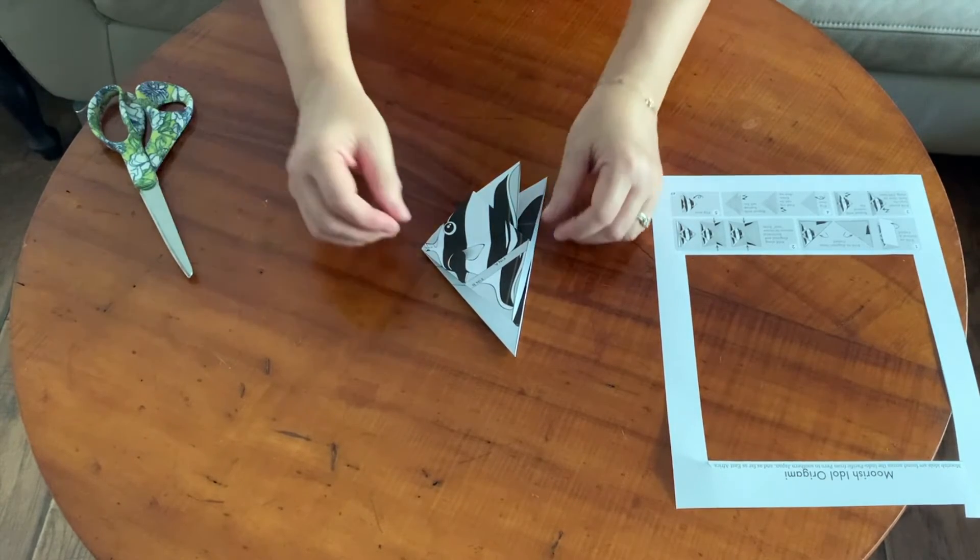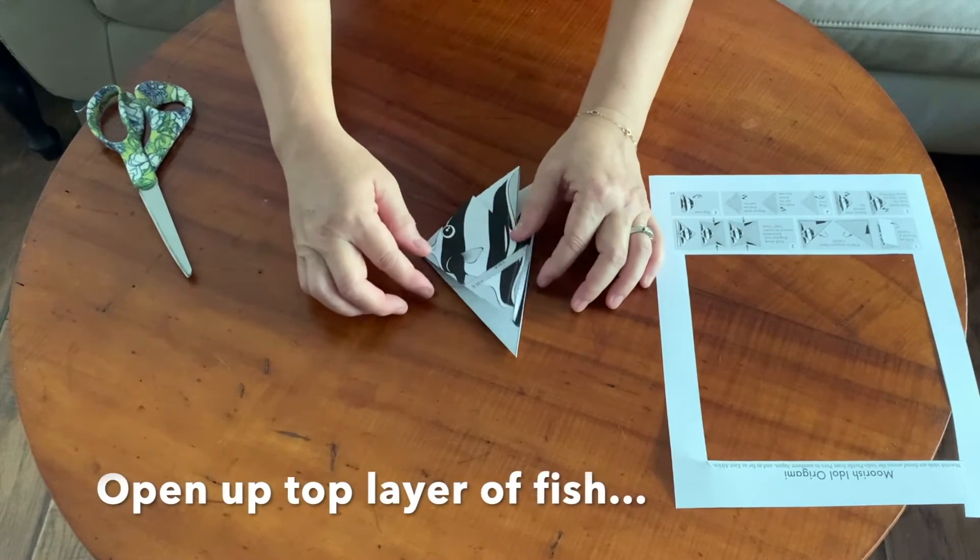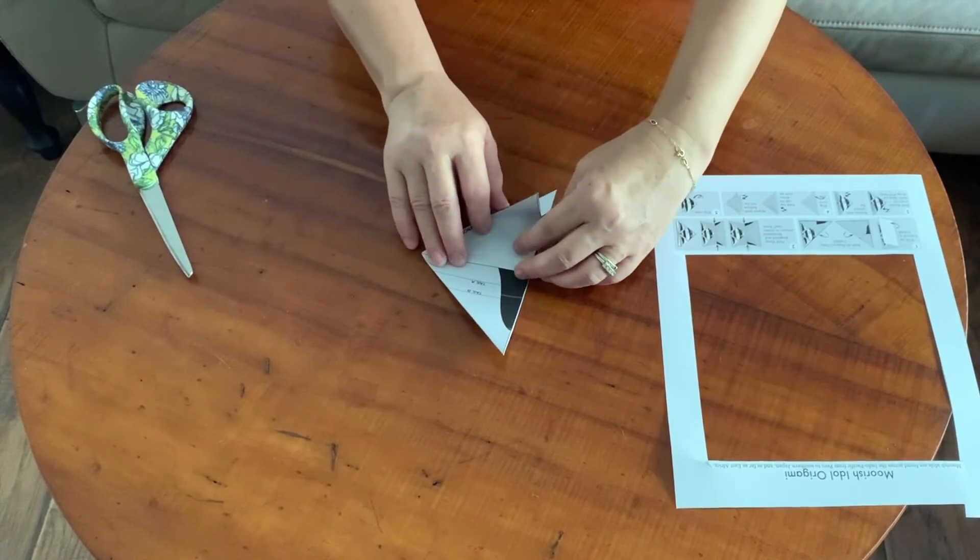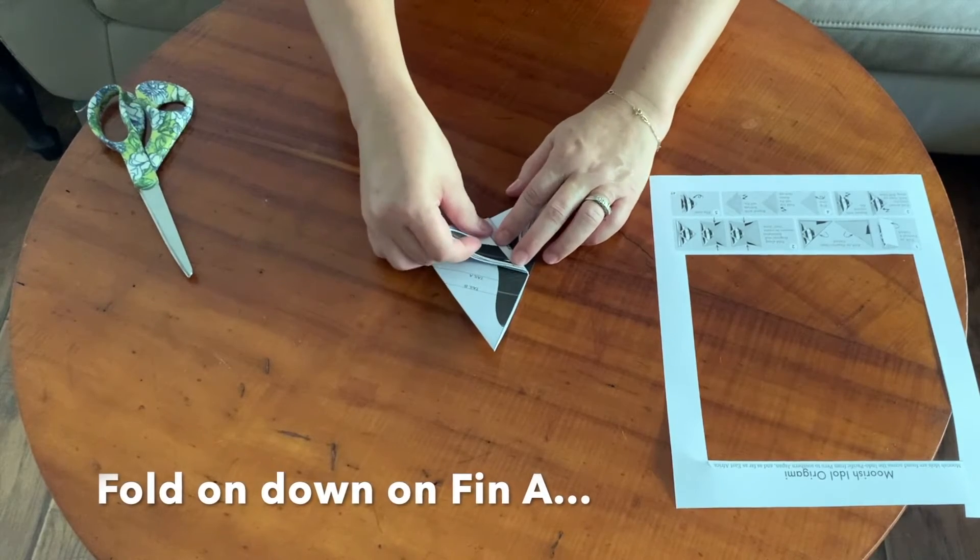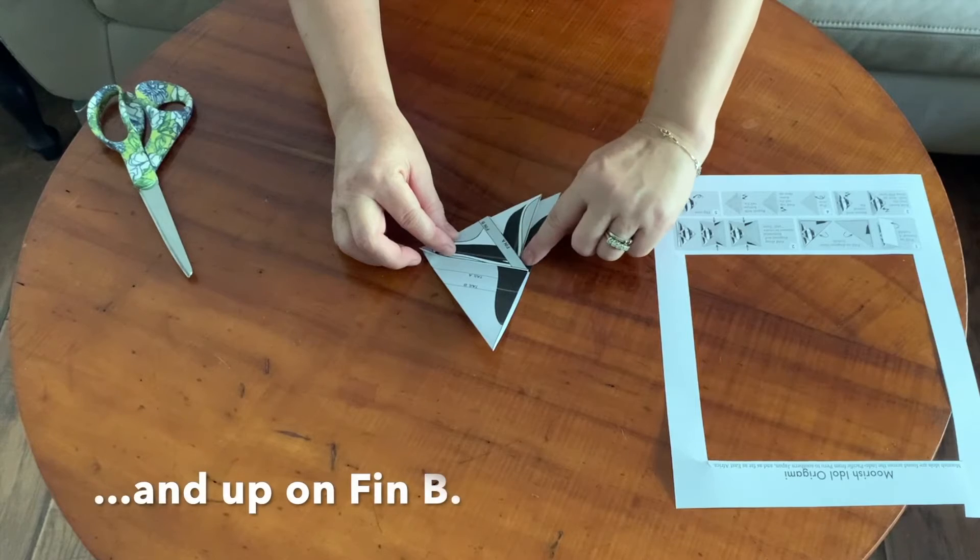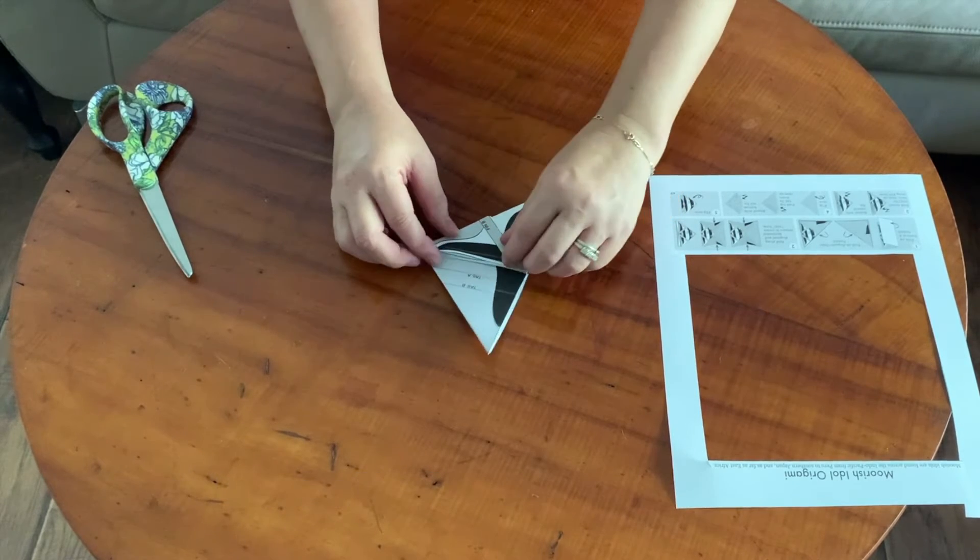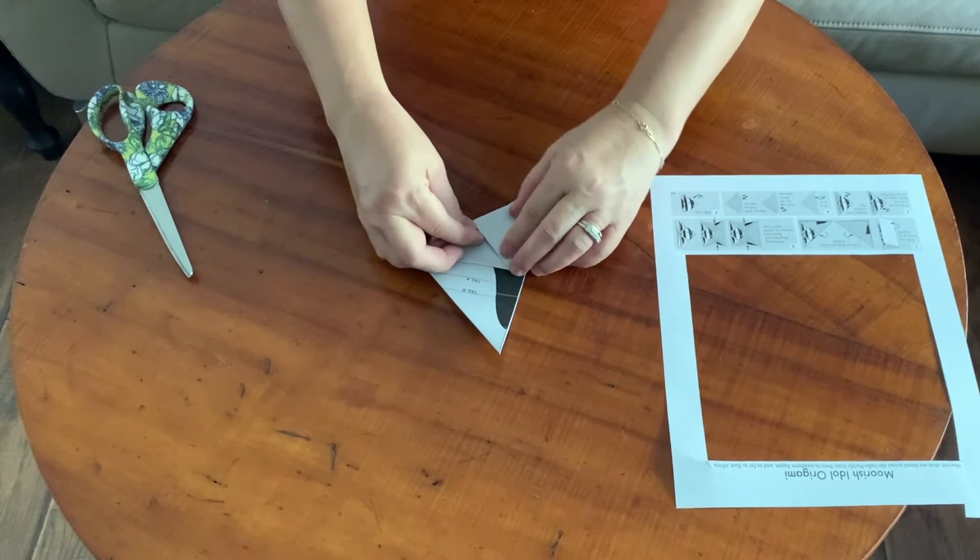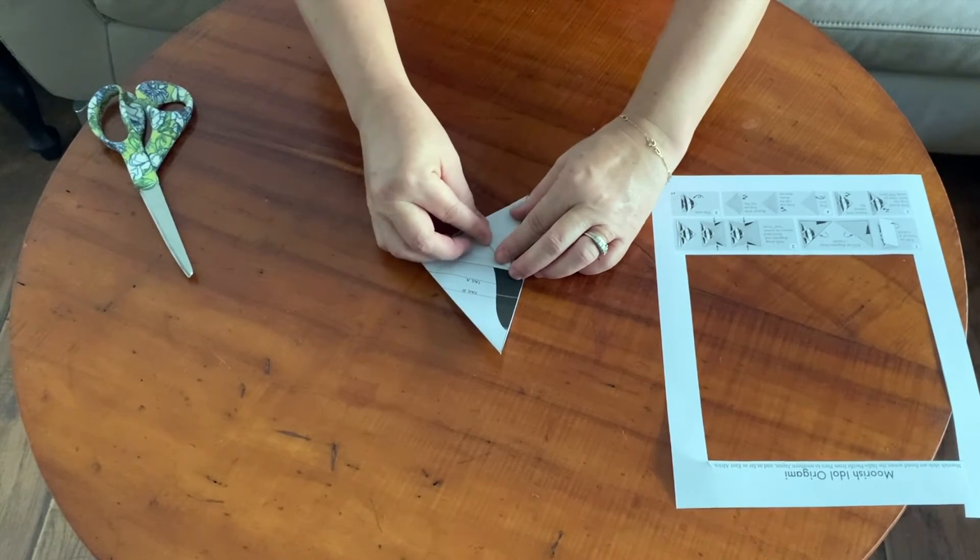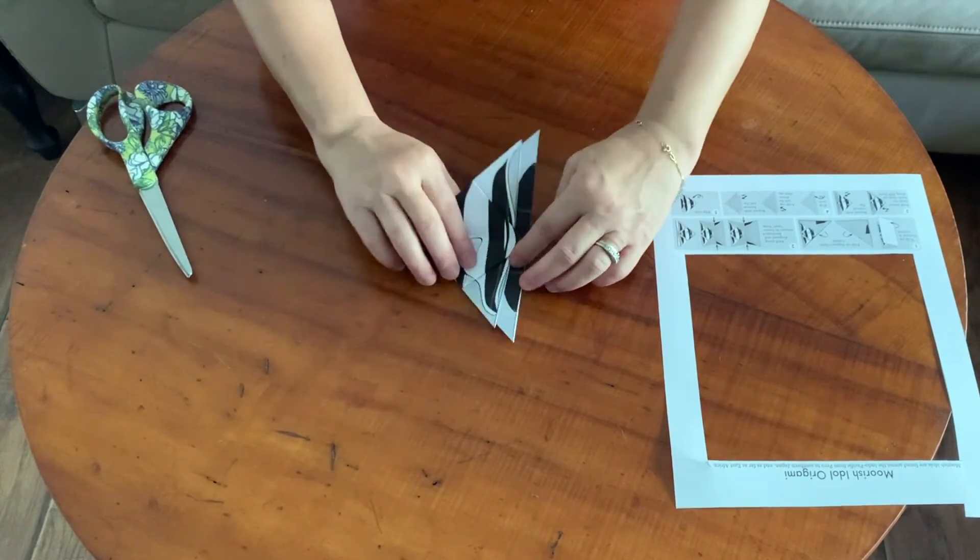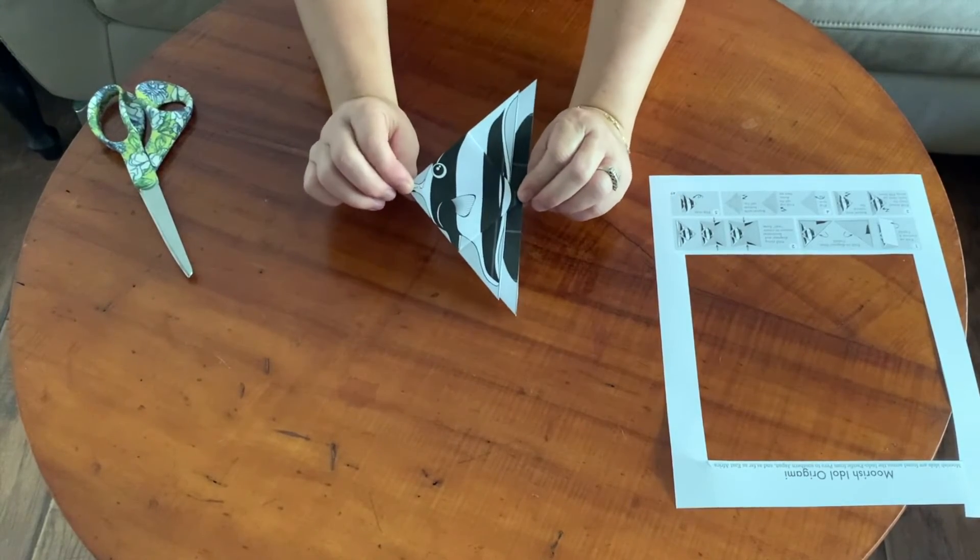We're going to repeat it on the ventral fin. Open up the top of your fish. Fold down diagonally on fin A and you're going to fold up diagonally on fin B. Just going to do our best here. Open up your origami and can you see how your fish is taking shape?